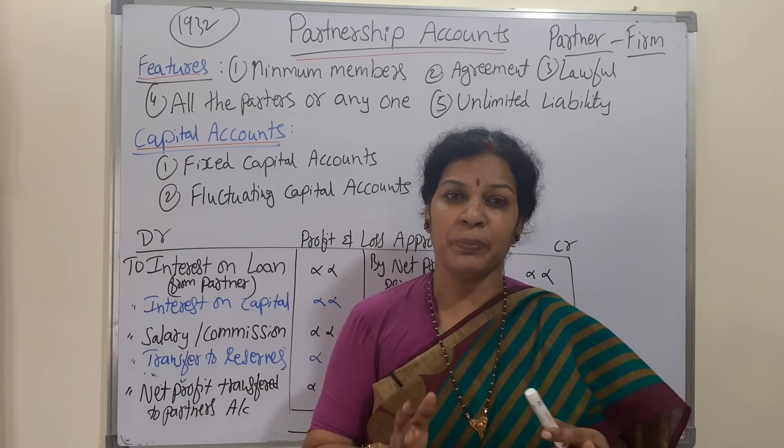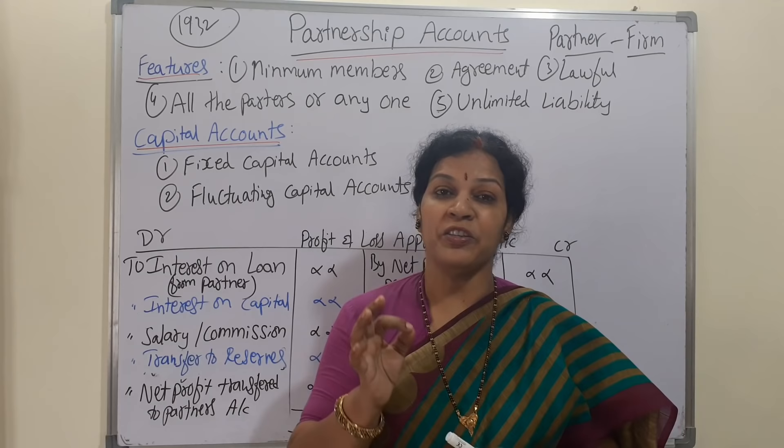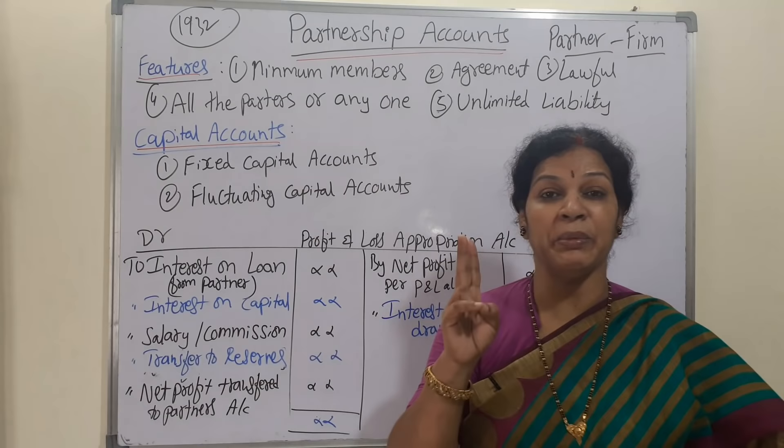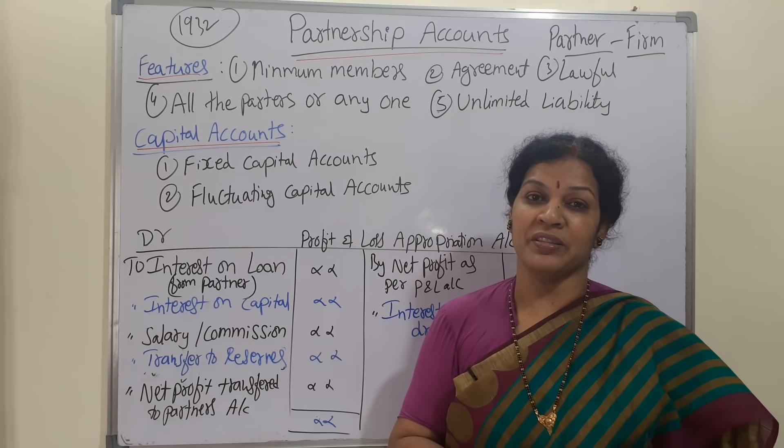Let me give a small introduction to partnership. Looking at the main features will give us a good understanding. The first feature is minimum members — a minimum of two members are required and a maximum of 10 members for a banking business, and 20 members for a non-banking business.